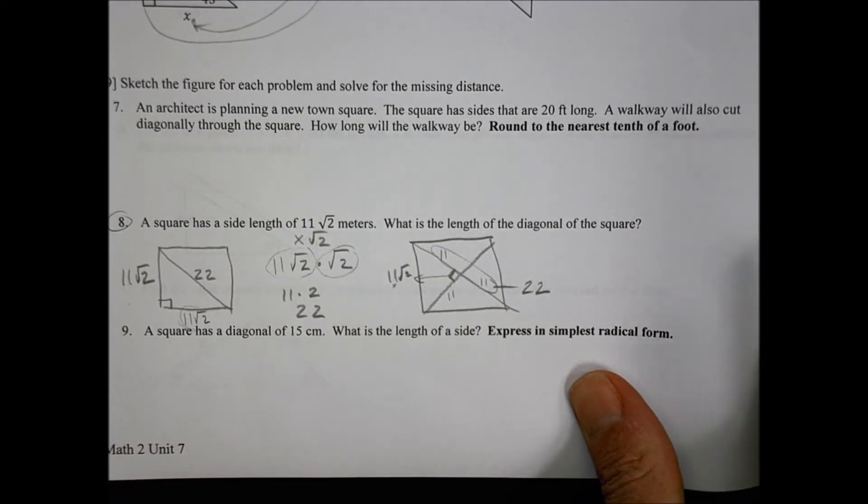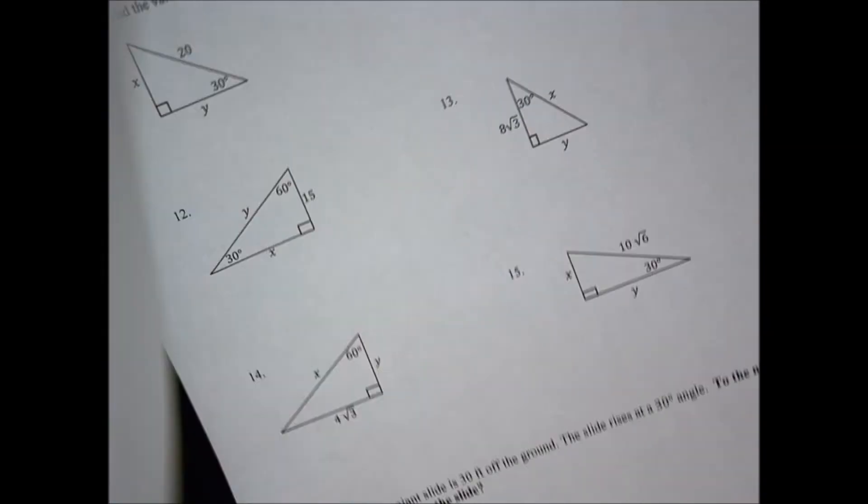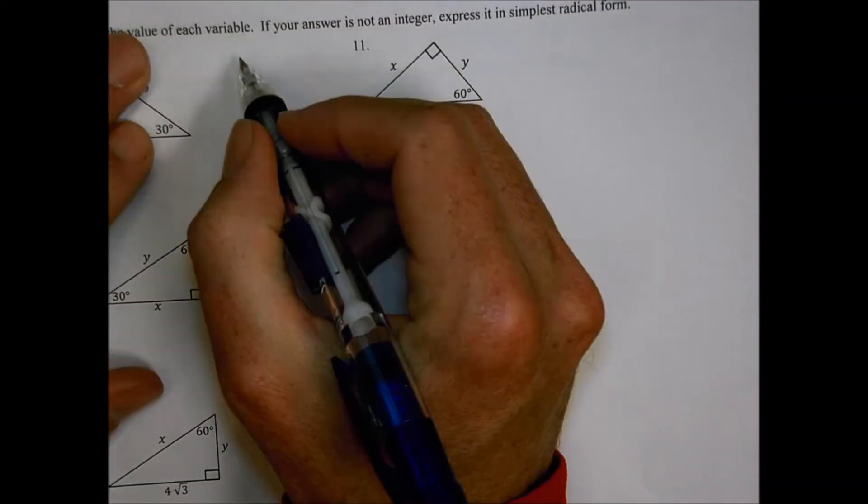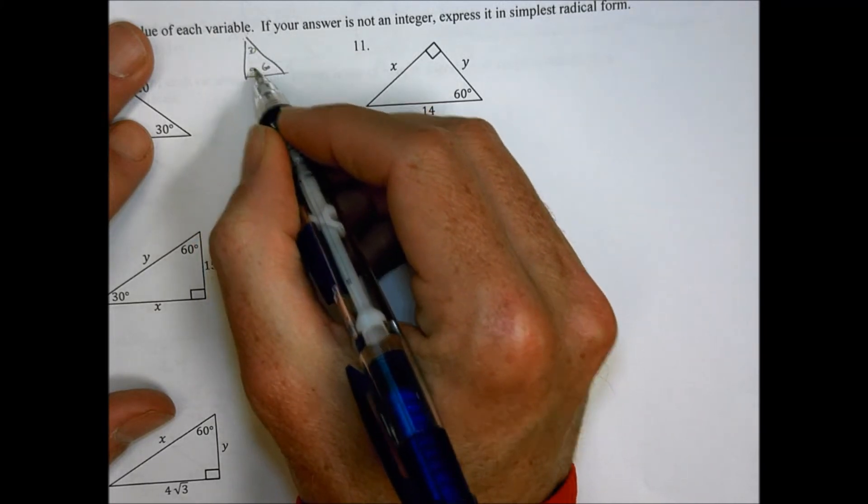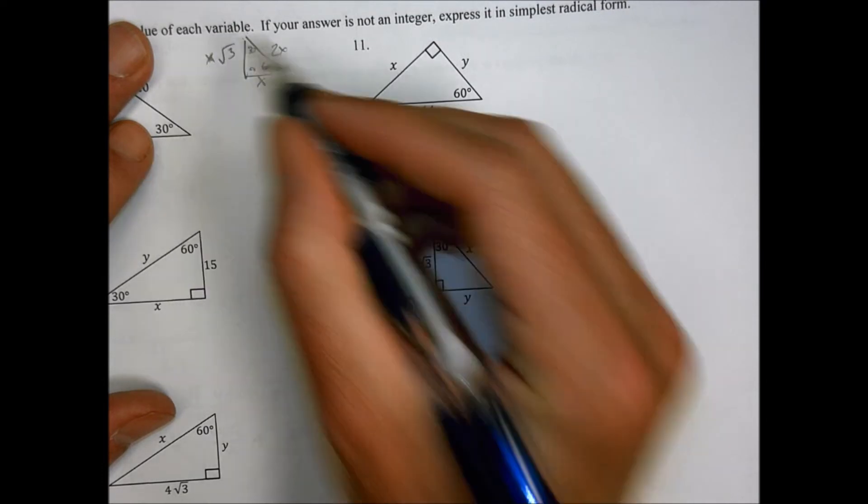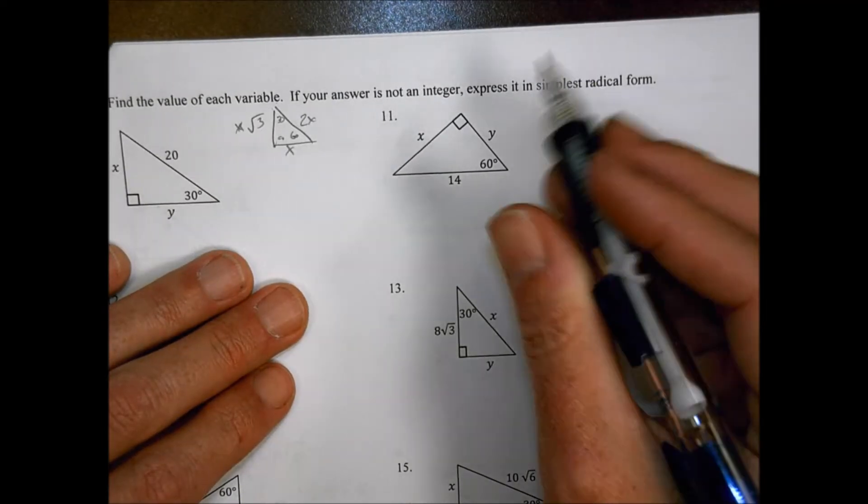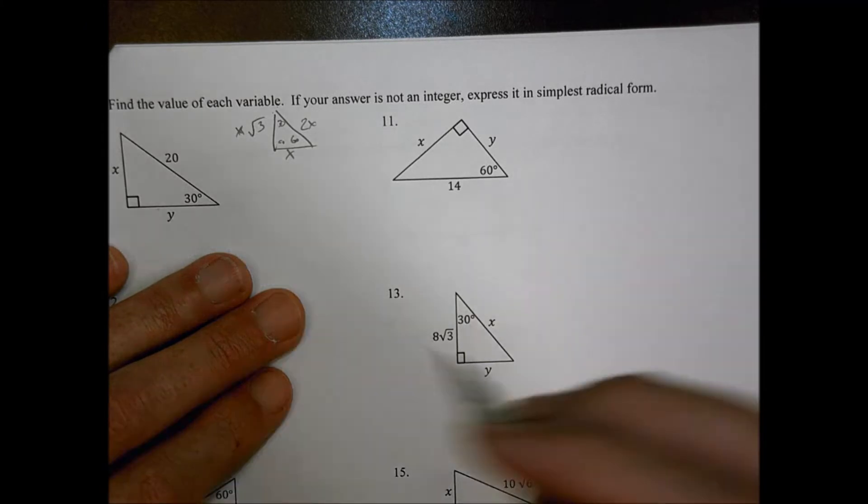Let's take a look at the back side. With our back side, we're looking at a new type of triangle, our 30, 60, 90. So here's our 30, 60, 90. We have X, we have 2X, and X root 3 for our kind of formula there, for how this is going to work out. Let's take a look at number 11.